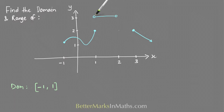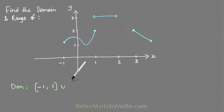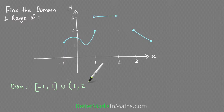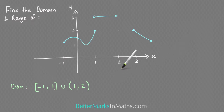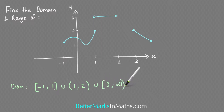For this next part of the graph, the x value here is 1 and the x value there is 2, and open circles means those two values are not included. So you have the union of the interval from 1 to 2, non-inclusive. Then for this last section, the x values start at 3 and head off towards positive infinity, and 3 is included, so again union and include the 3, then off to infinity.